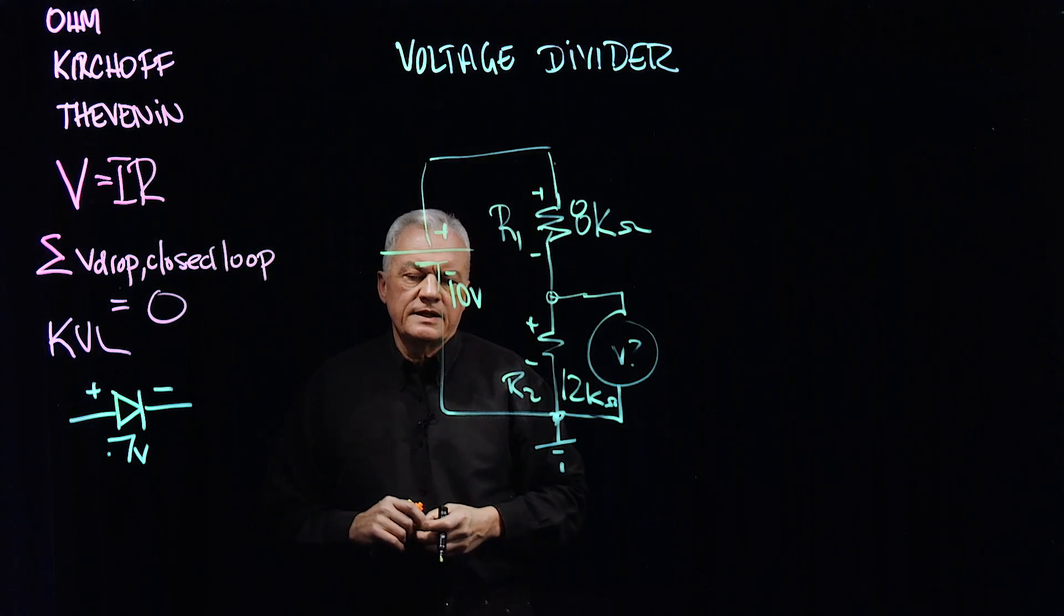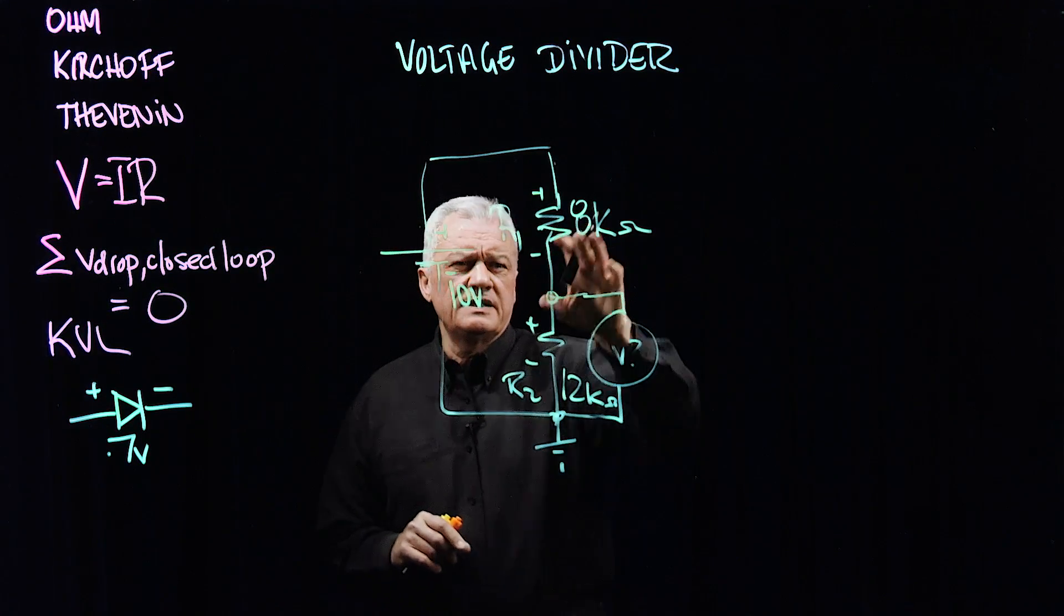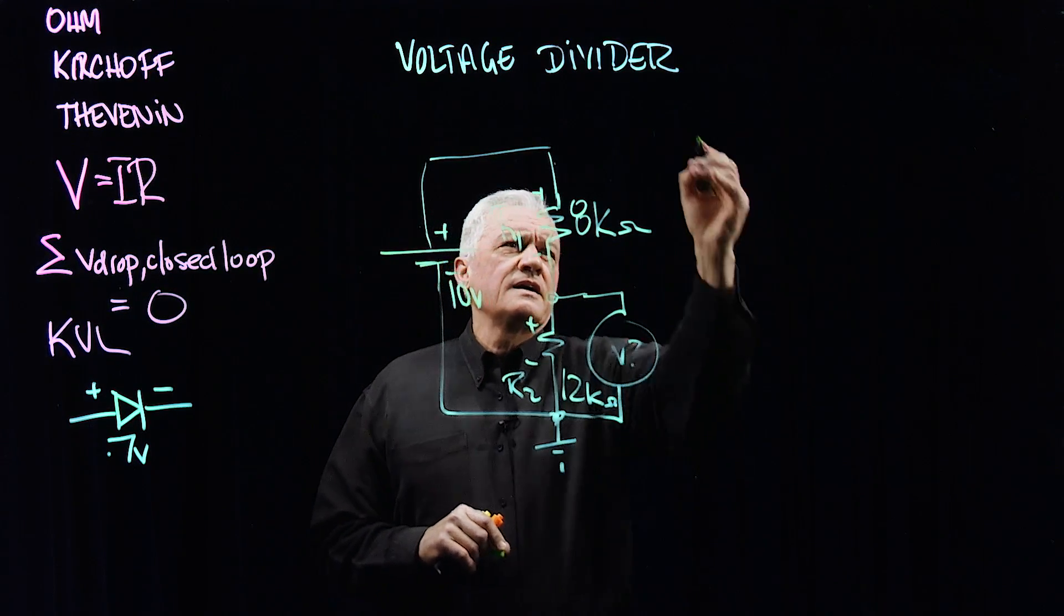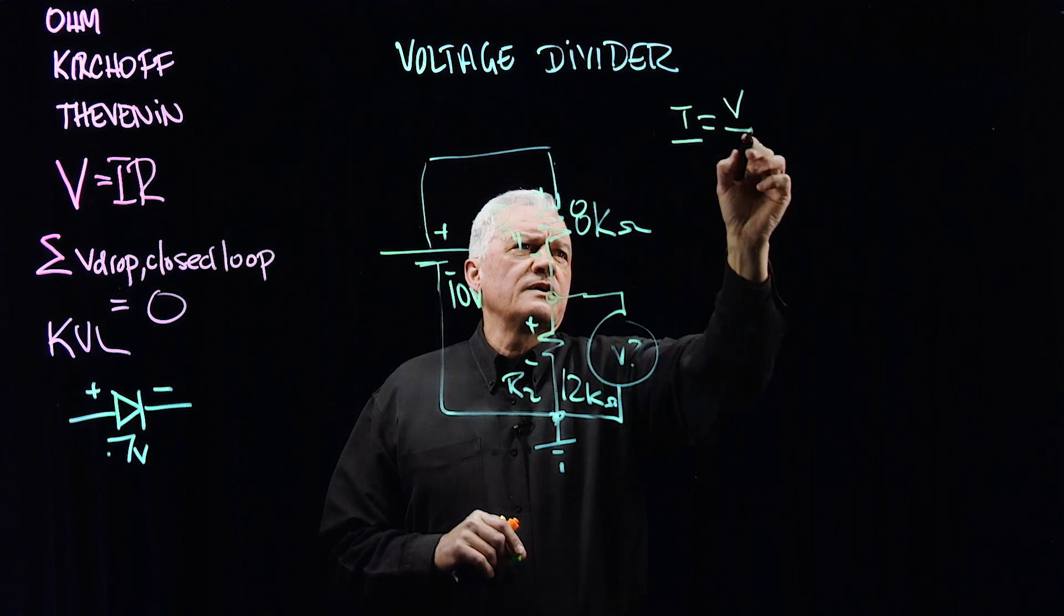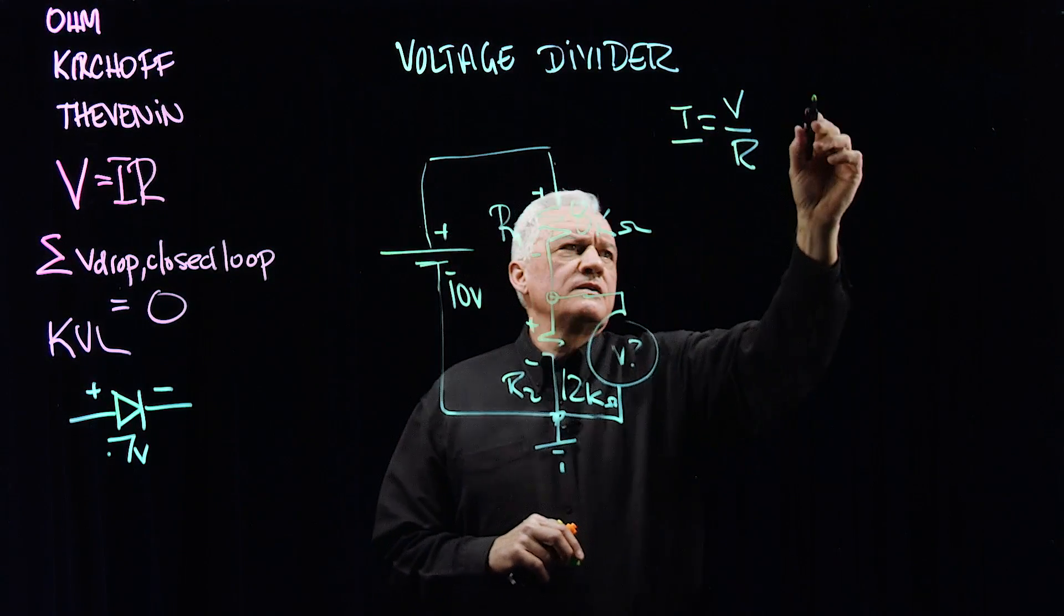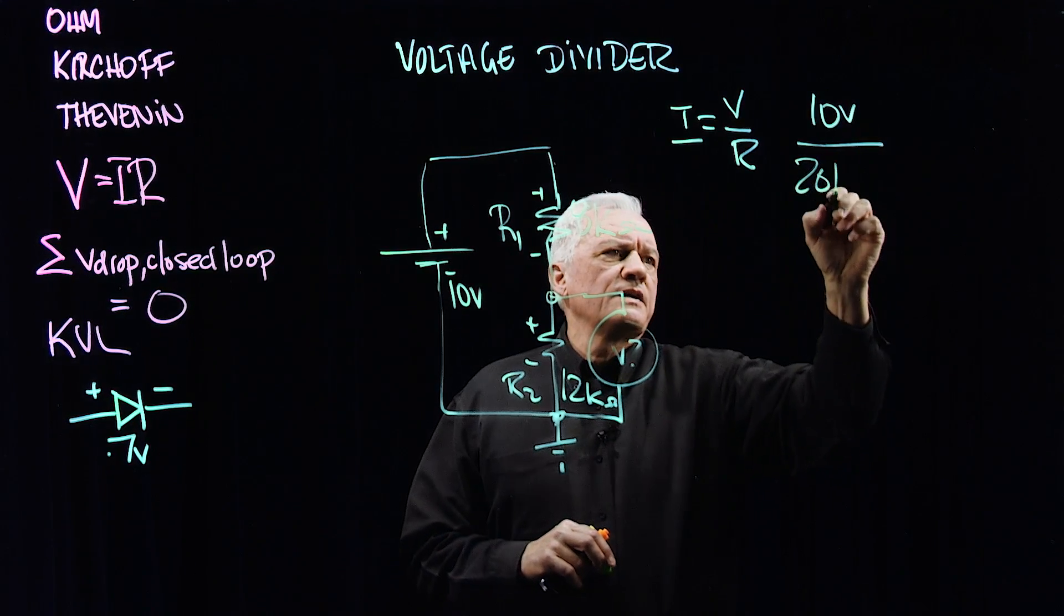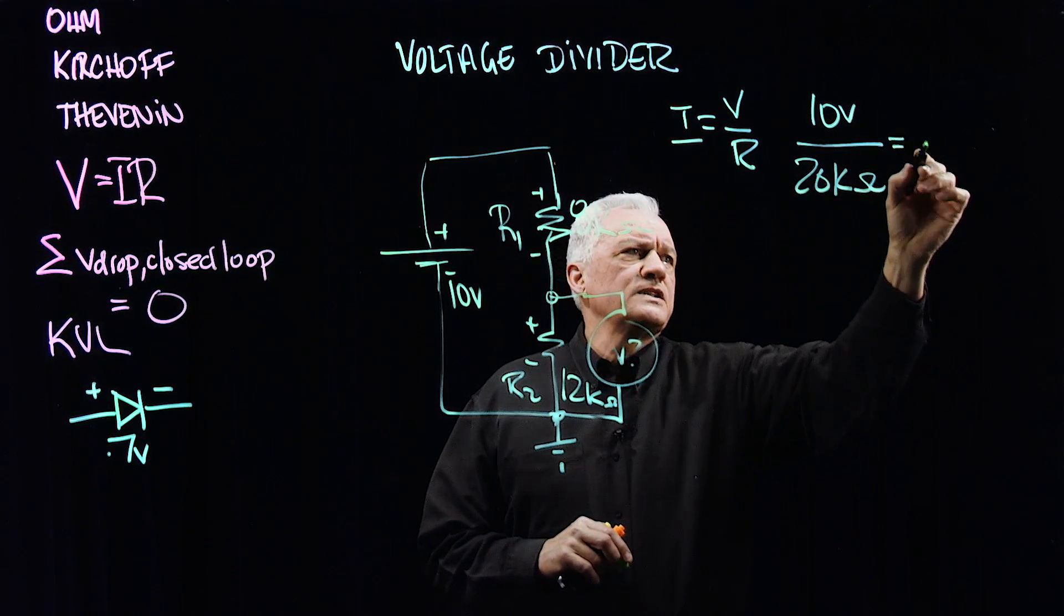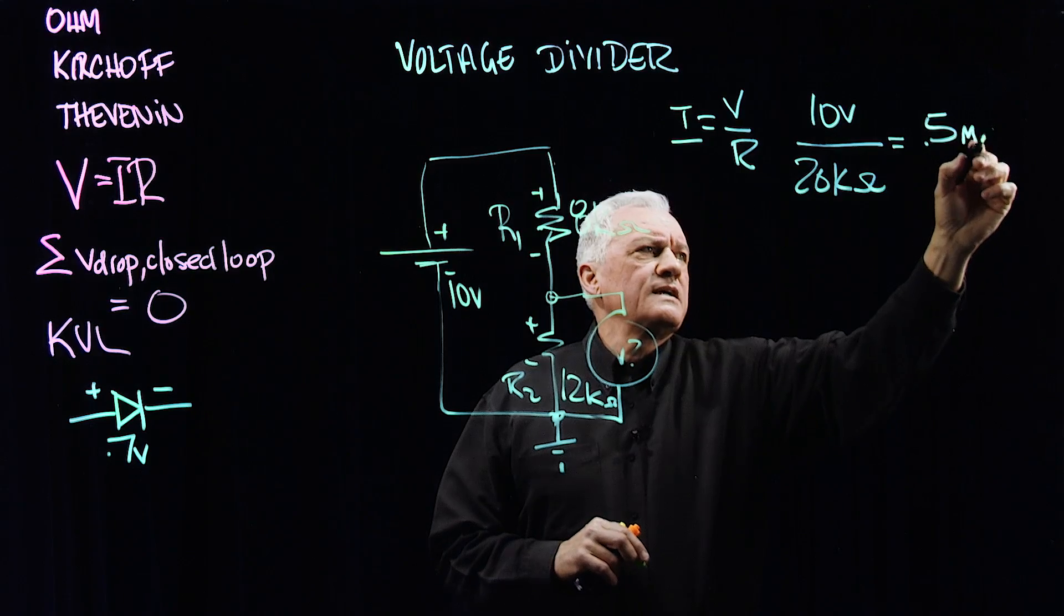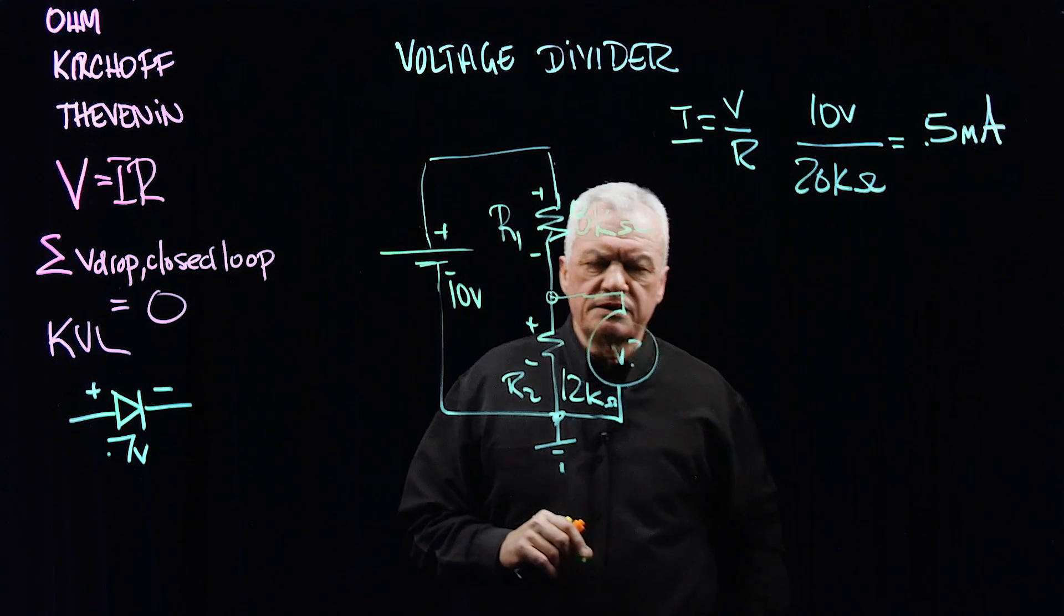So we know that looking at this, 12 and 8 is 20K. Again Ohm's law, I equals V over R. If we have 10 volts divided by 20,000 ohms, what we have is 0.5 milliamps of current in the circuit.